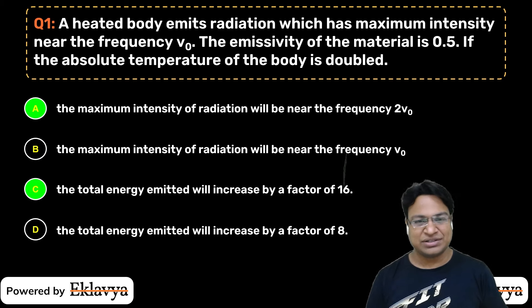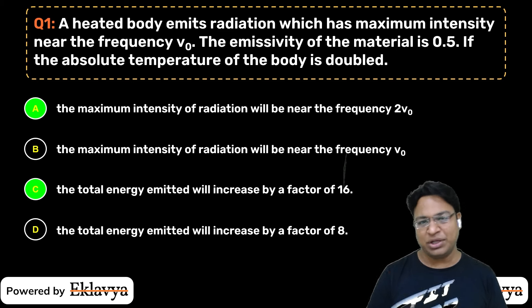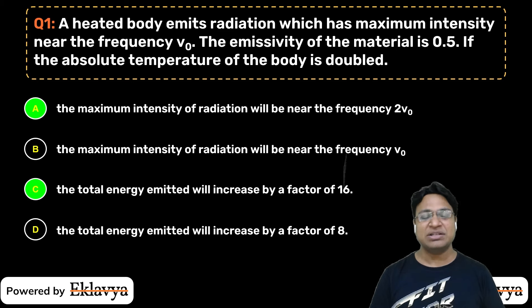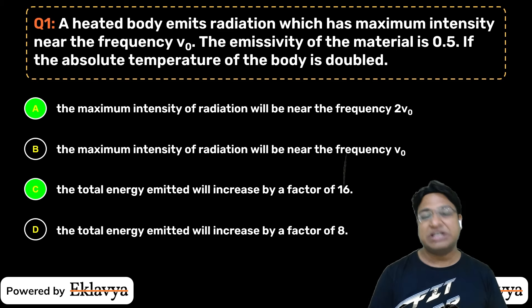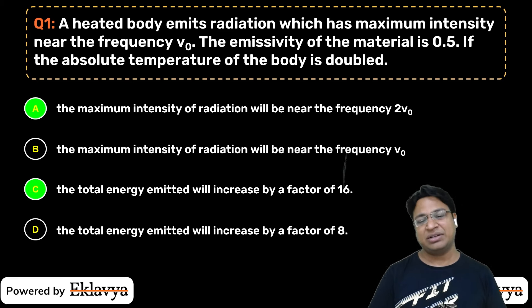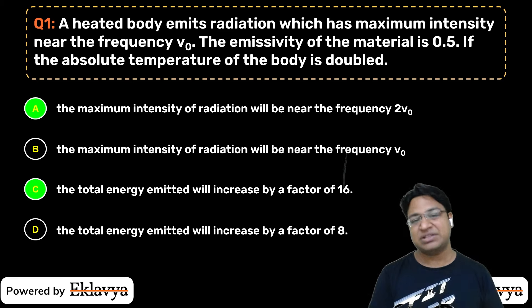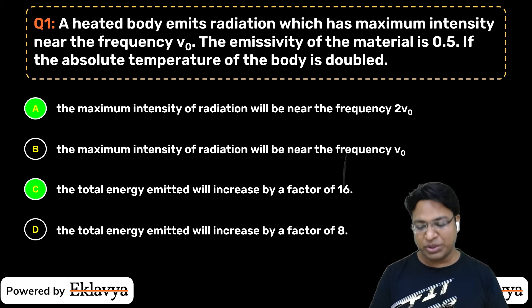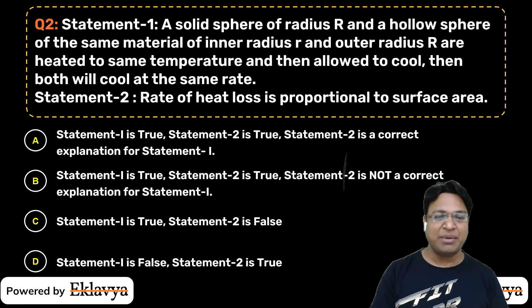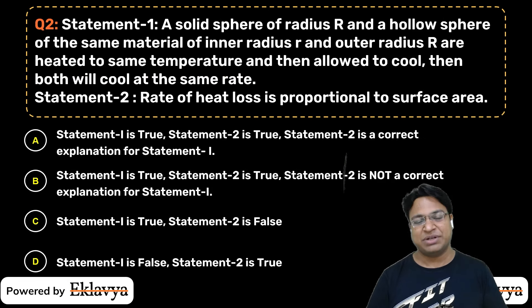Alright students, A and C is the correct answer. We have talked about Wien's Displacement Law and Stefan's Law. Now let's look at the next question.